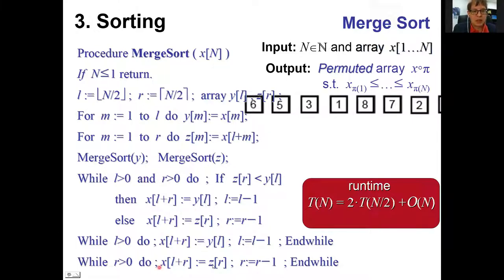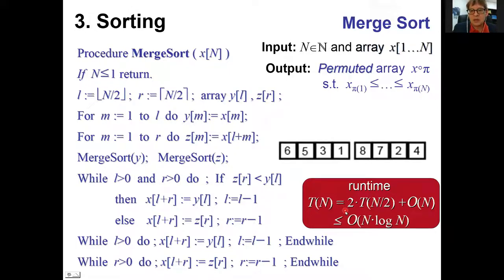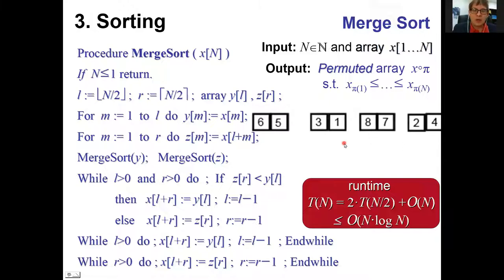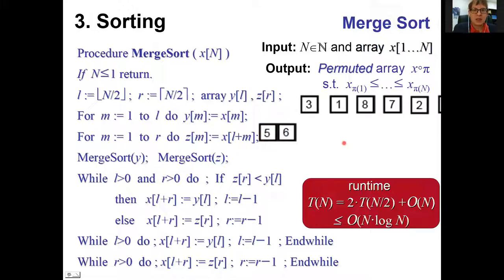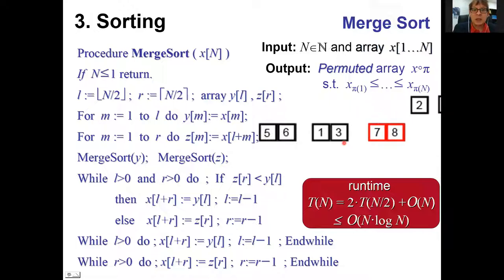The master theorem gives a running time of N log N. We've found our first N log N algorithm for sorting — a rigorous analysis beating the quadratic time of the previous three algorithms. Merge sort is faster than bubble sort.